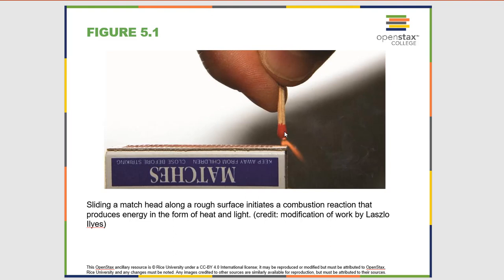That energy has to come from somewhere, and where it comes from is rearranging chemical bonds. In the wood of the match, you have carbons bonded to carbons and hydrogens. When those carbons start to bond to oxygens and those hydrogens start to bond to oxygens, you form carbon dioxide and water in a combustion reaction. The energy of carbon dioxide and water is lower than the energy of the molecules in the wood, and that energy is given off as heat and light.